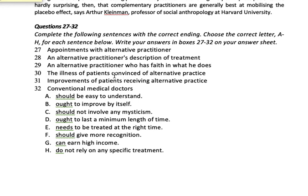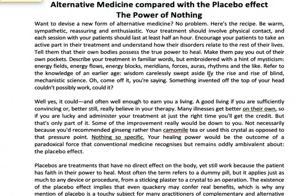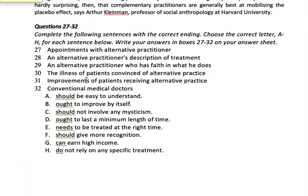Next is 'the illness of patients convinced of alternative practice.' If the alternative practitioner is sufficiently convincing, then the passage tells us: 'many illnesses get better on their own.' So the illness gets better by itself. Looking at the endings, 'ought to improve by itself' means the same thing as 'should get better on their own.' The answer to question 30 is B.